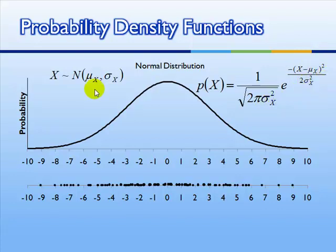Now what are these mu's and sigmas? Mu, in this case, means the mean. Mu sub x means the mean of x. The mean is the middle value. In this case, it happens to be 0. So the mean of this distribution is 0.